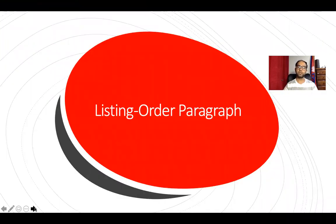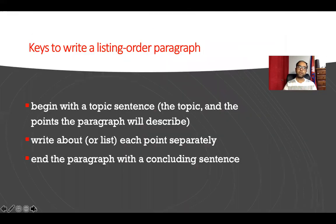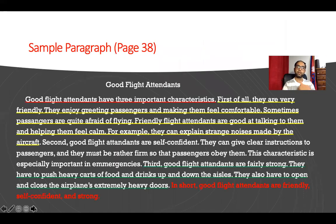The last thing we want to talk about today is listing order paragraphs. Up to now you've been writing a paragraph about your best friend or somebody you admire. From now on you are going to write a more academic paragraph. A paragraph always has three different parts: it begins with a topic sentence that states the topic and the points the paragraph will describe, it talks about each point separately, and then at the end it concludes with a concluding sentence. The example we have is from page 38 of your textbook — 'Good Flight Attendants.' Let's quickly read: 'Good flight attendants have three important characteristics.'